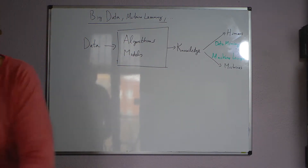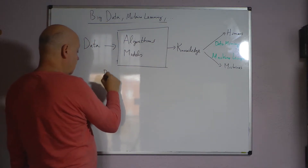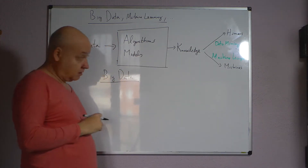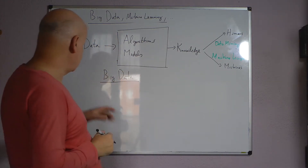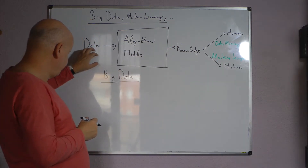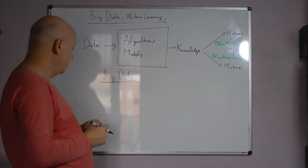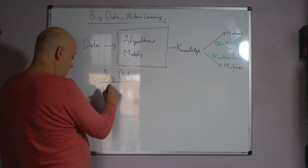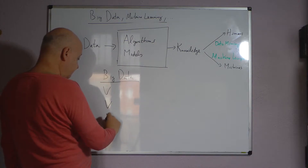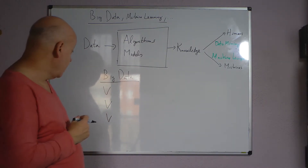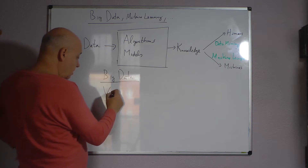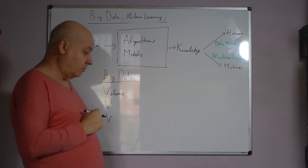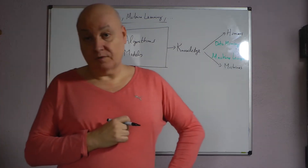Then of course you have big data, and this implies all the scheme, but refers especially to the data. One way to explain this is using the three V's. The first is volume, because in that case you have large amounts of data — this is especially the 'big' in big data.